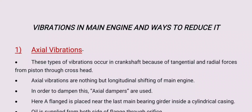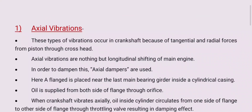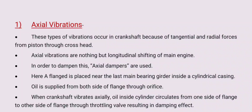First is axial vibration. This type of vibration occurs in the crankshaft because of tangential and radial forces from the piston through the crosshead. Axial vibration is nothing but longitudinal shifting of the main engine. In order to dampen this, axial dampers are used.